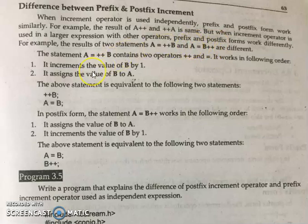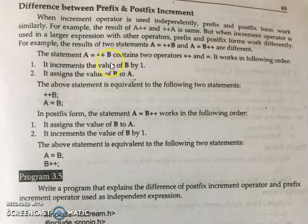For example, the first scenario is: a = ++b. This is the prefix increment demonstration. There are two operators — increment and assignment — and they work in the following order. First, there will be an increment by one in b. Then, the incremented value of b is assigned to a. For example, if b is already 1, then after increment b becomes 2, and this value will be assigned to a. So the value of a will be 2.